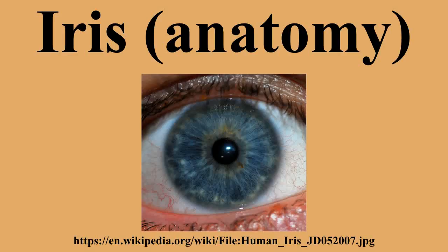In optical terms, the pupil is the eye's aperture, while the iris is the diaphragm that serves as the aperture stop structure. The iris consists of two layers: the front pigmented fibrovascular layer known as the stroma, and beneath the stroma, pigmented epithelial cells.